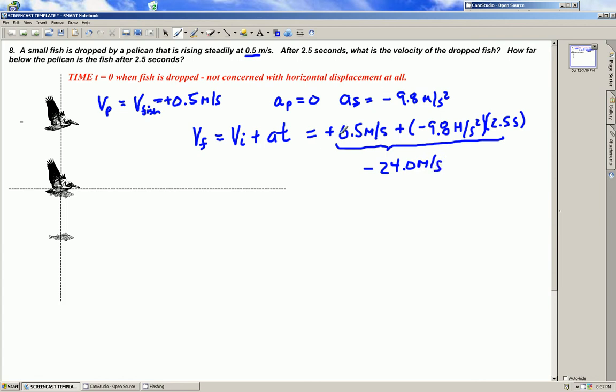Now this small term here, the 0.5 meters per second, is significant. You had to add that to this term and if you just did this part of the equation and not that you did not get full credit because this was important.